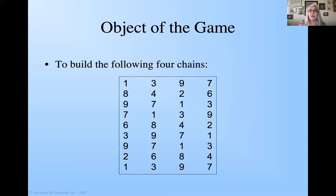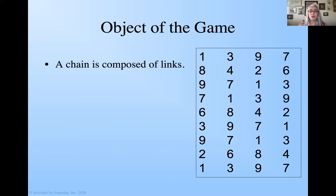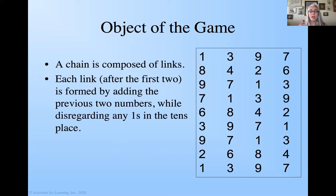The object of the game is to build the following four chains. Now, as you're looking at this, you're thinking, what is this? Well, let me help you out here. A chain is composed of links, and each link after the first two is formed by adding the previous two numbers while disregarding any 1s in the tens place. Now, if you're like me, that doesn't make a whole lot of sense. Let me show you here.